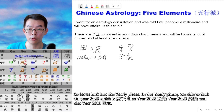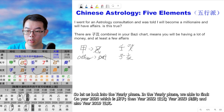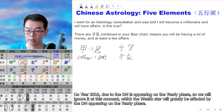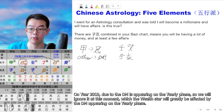Let us look into the yearly phases. We can find wealth star appearances on year 2020, which is Geng Zi; year 2022, which is Ren Yin; year 2023, which is Gui Mao; and also year 2019, which has Hai. On year 2019, because the day master is also appearing on the yearly phase, we will ignore it at this moment, as the wealth star will be greatly affected by the day master's appearance.